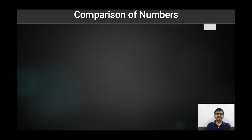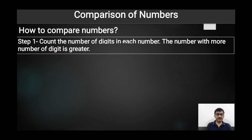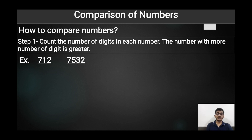Now we will understand how to compare numbers. For that we need to follow some steps. Step one: count the number of digits in each number. The number with more digits will be the greater number. For example, the first number has only three digits and the second number has four digits, so 712 is less than 7532.